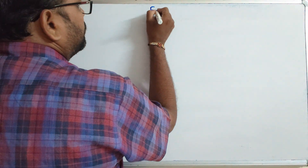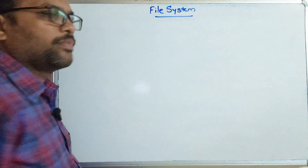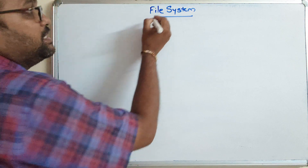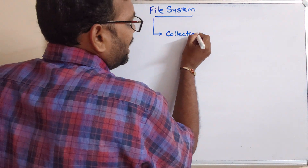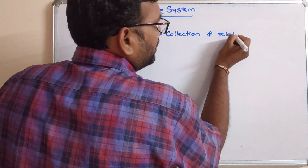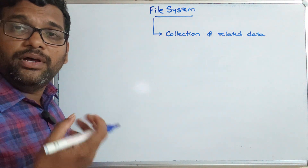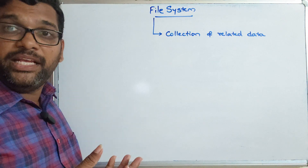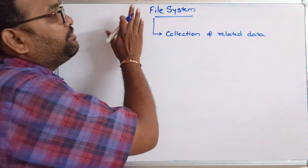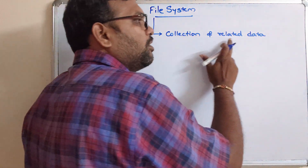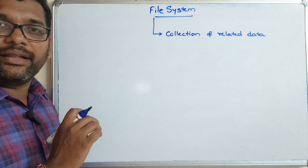So here, first let us see what is a file. A file is a collection of related data. Related data means the file may have textual data, or an image, or any records of a database — that also we will be calling as a file. So we can define a file as a collection of related data, and a file will be different from a directory.